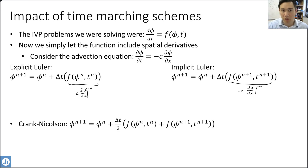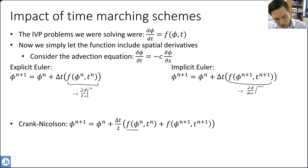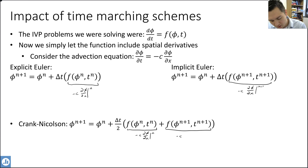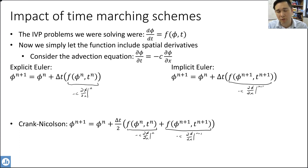We're not limited to just these time marching schemes. If we wanted to use a Crank-Nicolson approach, this would include minus c d phi/dx evaluated at time index n as well as minus c d phi/dx evaluated at time index n plus 1. You would just create a finite difference equation taking this into account.